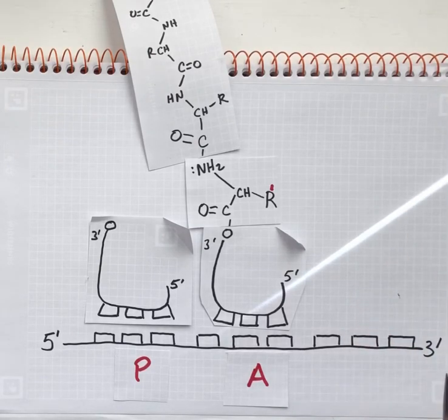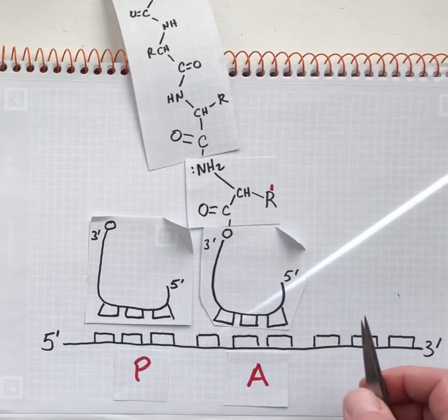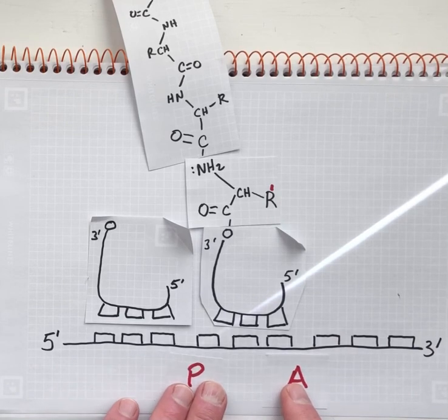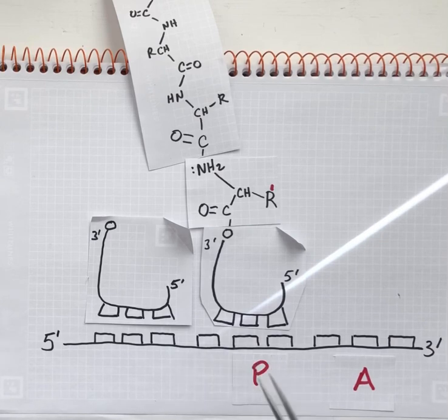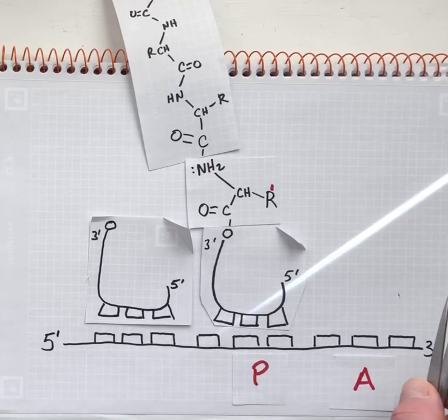At this point, the ribosome will ratchet forward. These sites—the A-site, P-site—are a property of the ribosome itself. The ribosome is moving forward exactly three nucleotides.